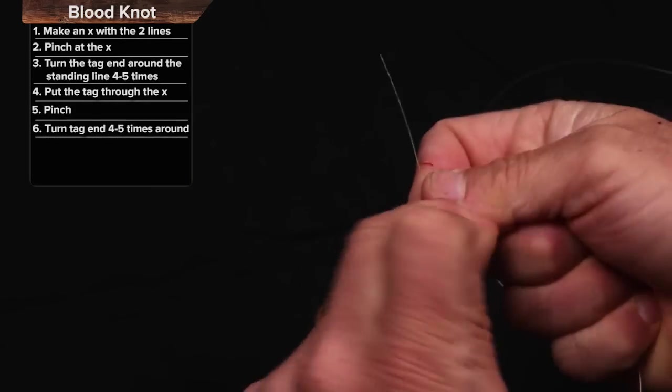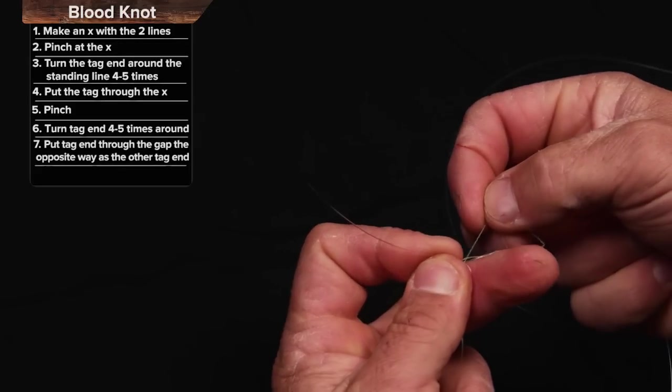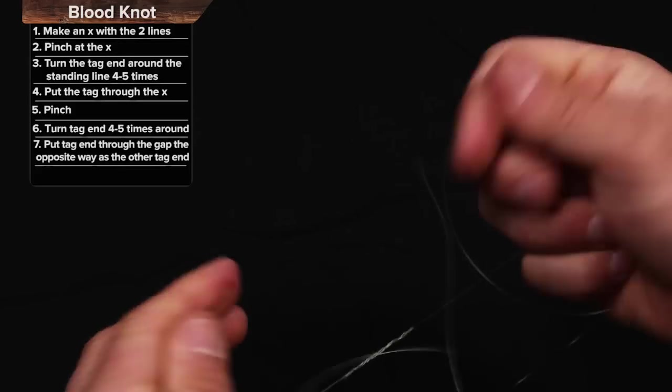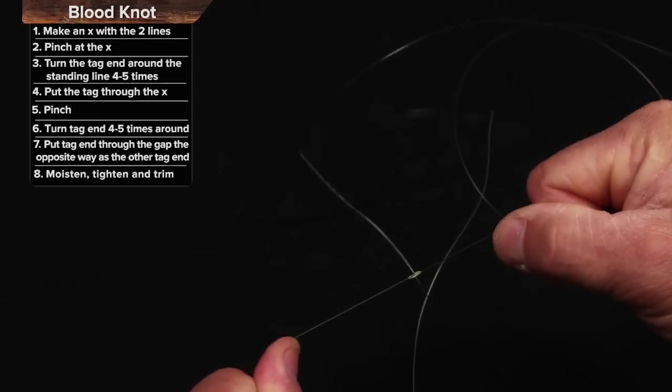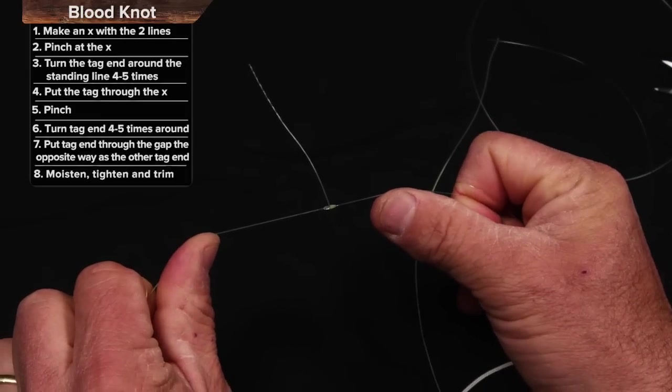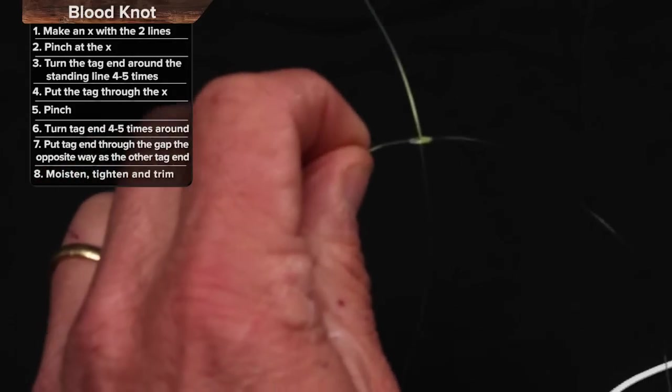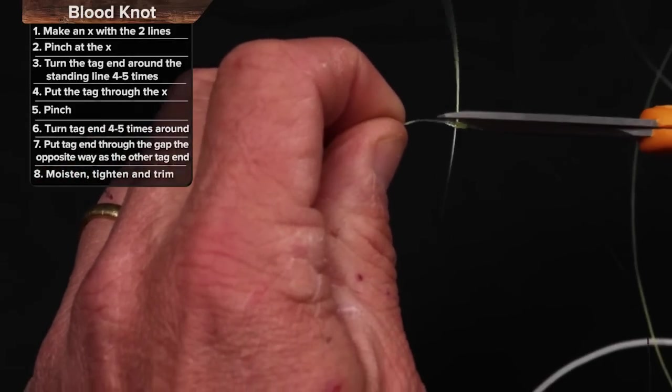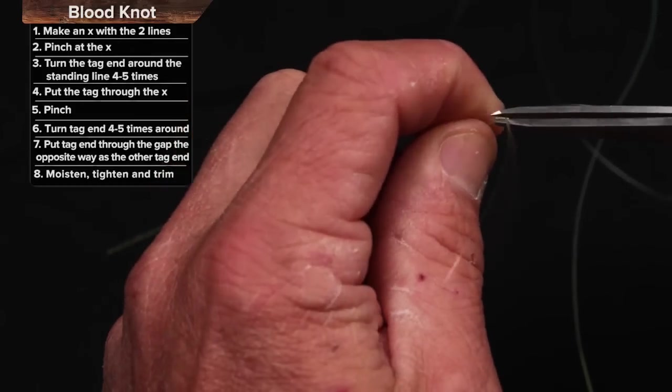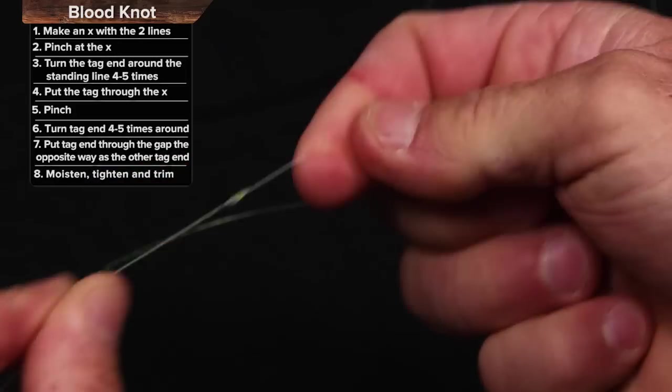Wrap the yellow. One, two, three, four, five. Put it right through again. I would lubricate it at this point and then I would pull it down in one motion to where that looks like that. Then I'm going to trim the tags. And there's my blood knot.